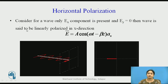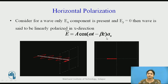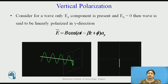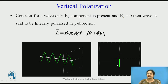For horizontal polarization, we consider a wave having only its x-direction electric field component, where the electric field component in the y direction equals zero. Then the wave is said to be linearly polarized in the x direction. As shown in the animated diagram, the electric field is stressed along the horizontal line. The wave is said to be vertically polarized if its Ey component is not equal to zero and its Ex component equals zero, and the resultant E traces along the vertical y axis.